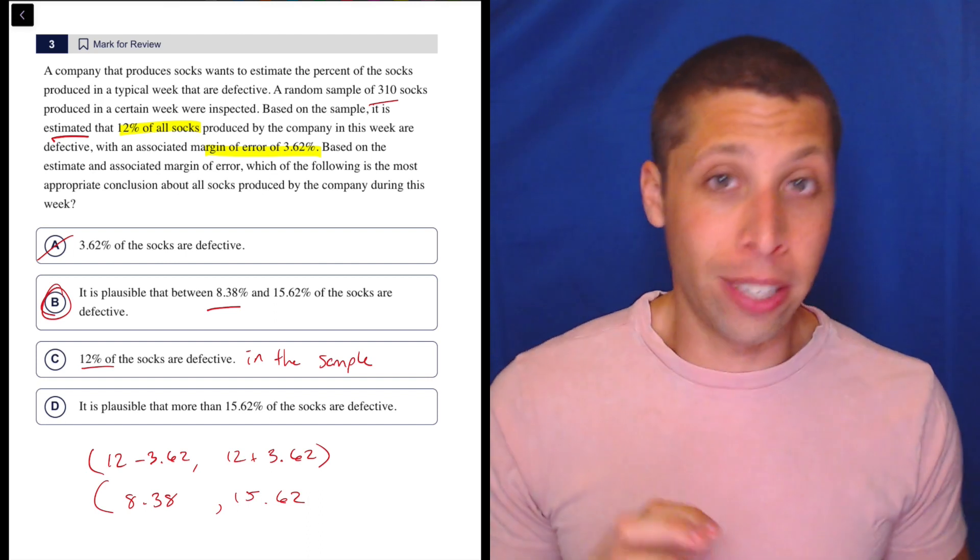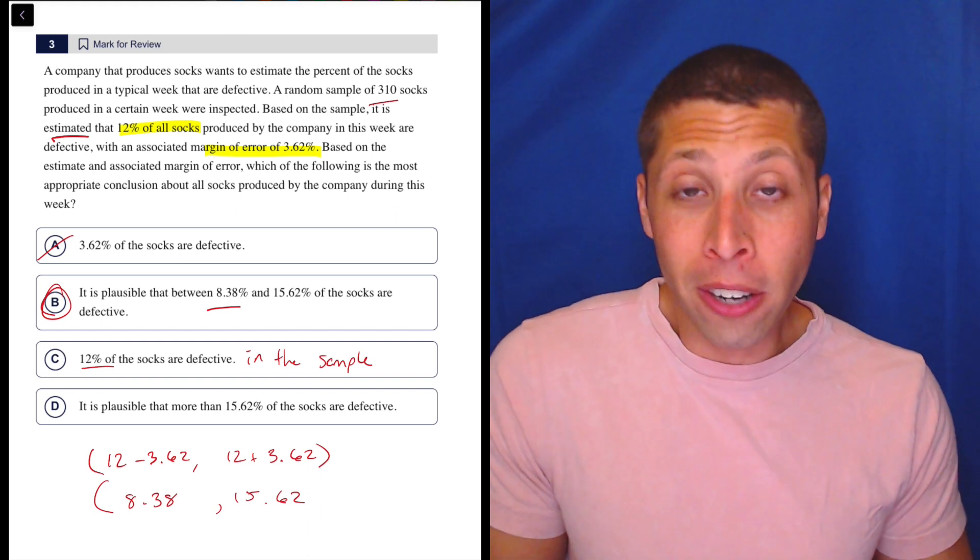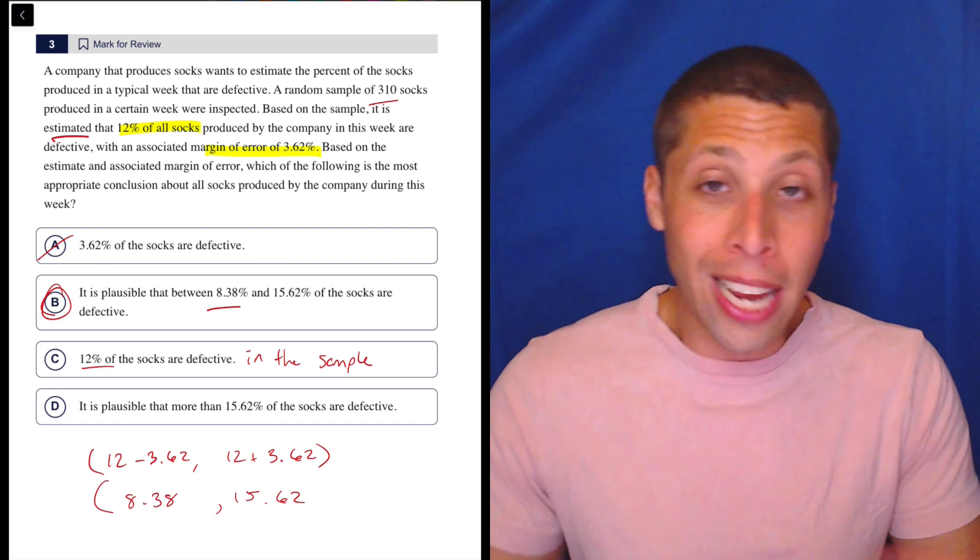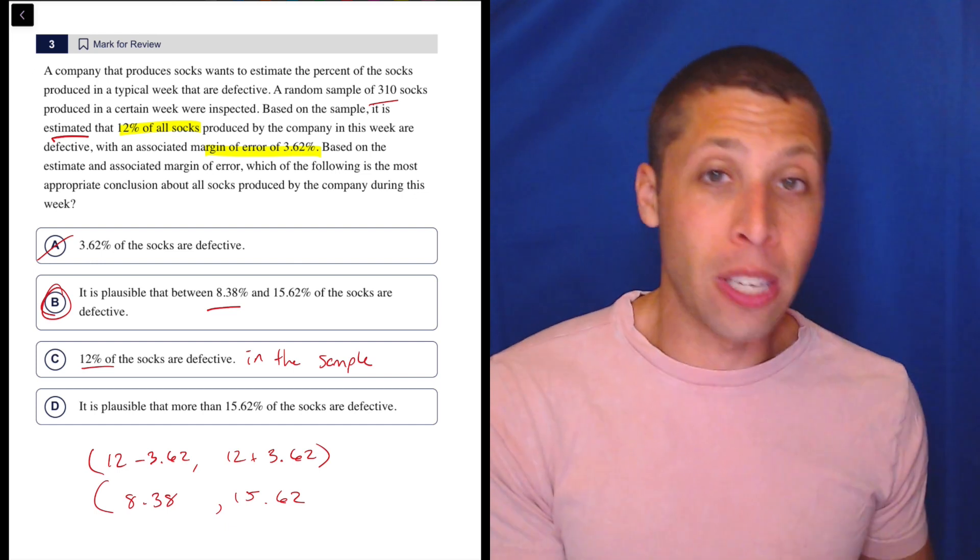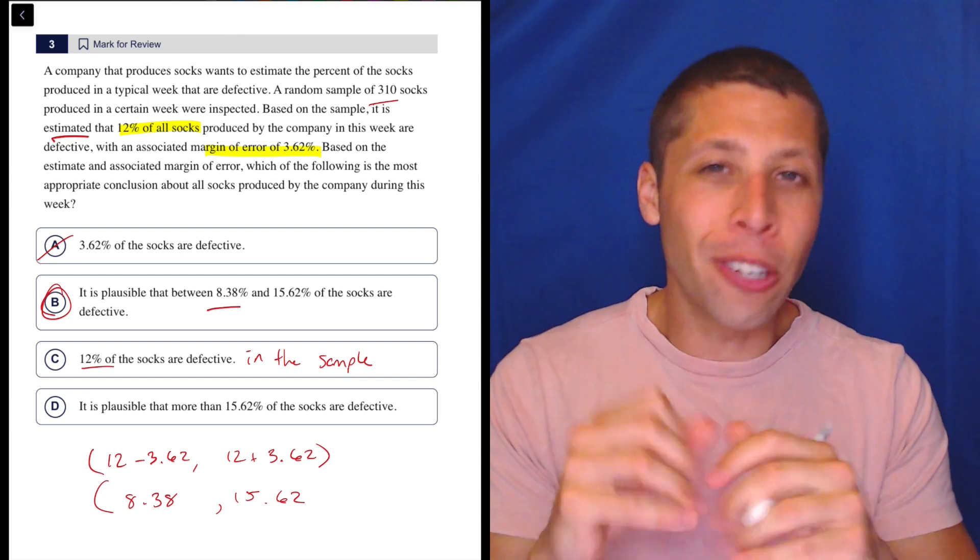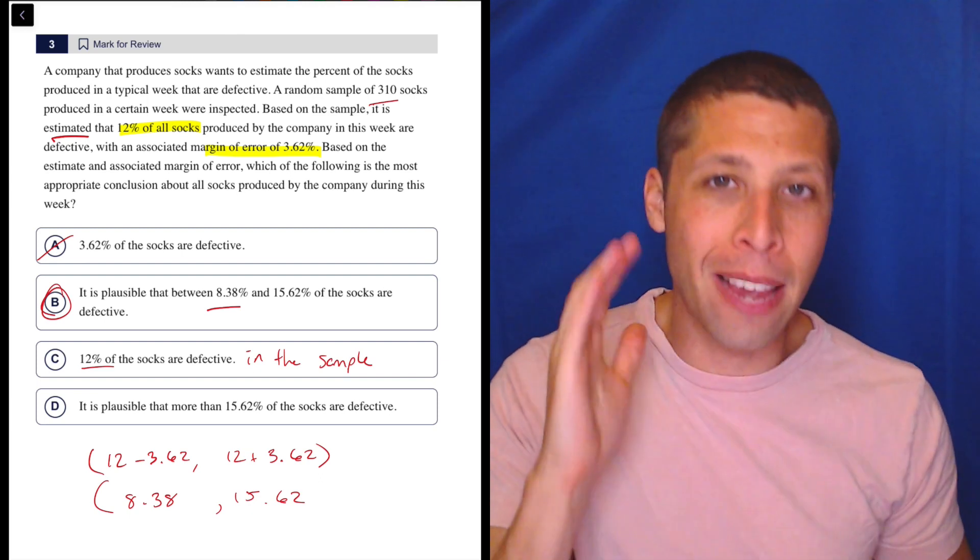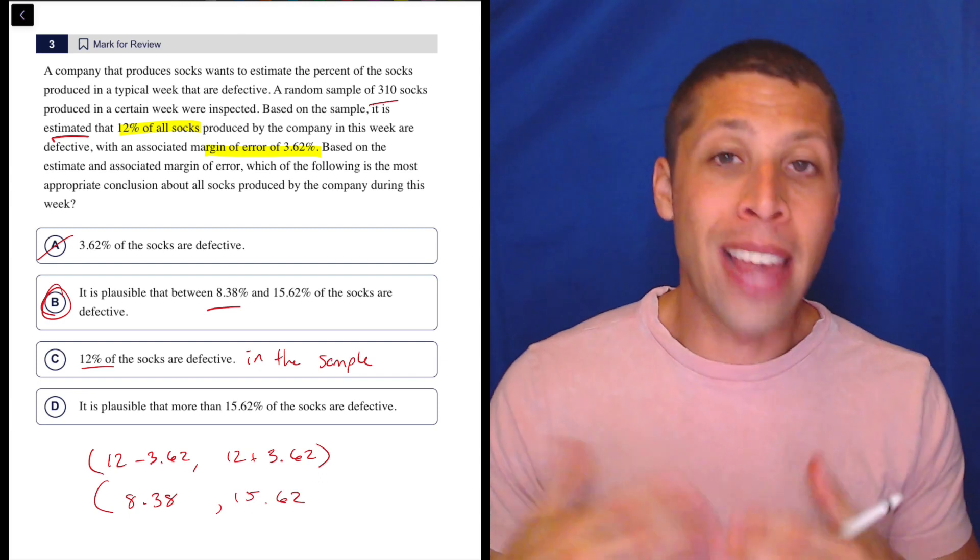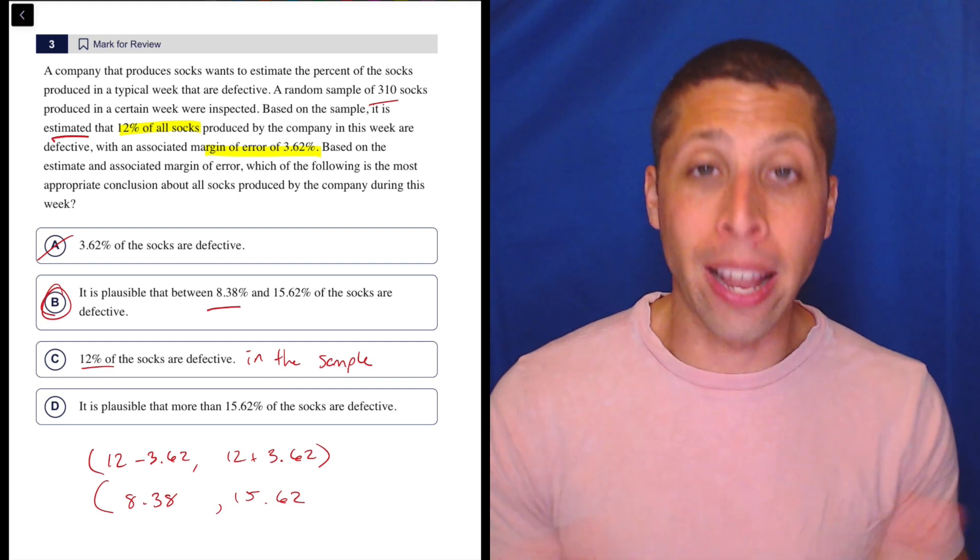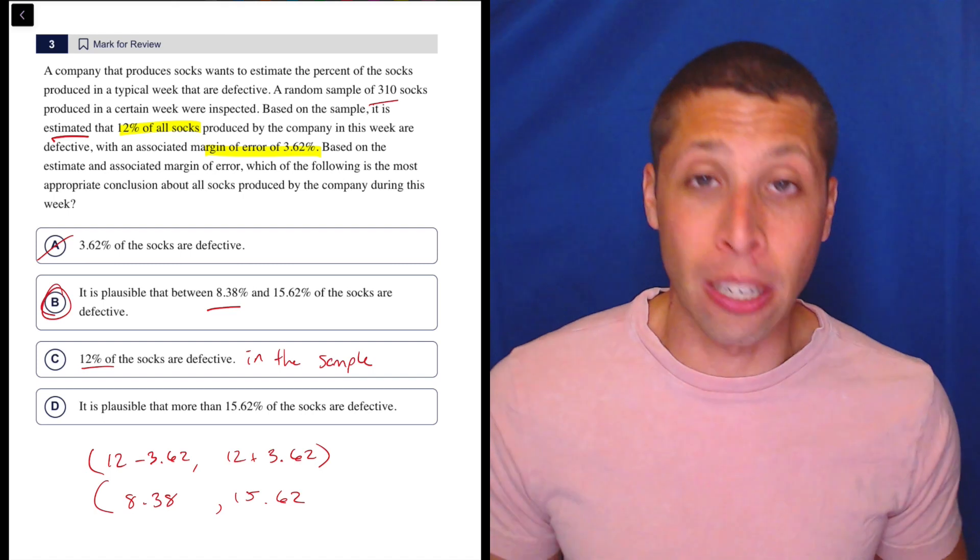But if we took another 310 socks, odds are that it wouldn't be another 12%. It would be somewhere between 8.38% and 15.62%. But when you keep taking samples, you're rarely going to get the exact same value every single time. That's why we take multiple samples and kind of have this margin of error to account for that disparity, those kinds of slight differences.